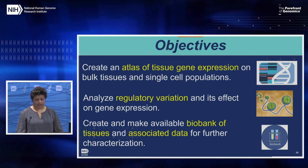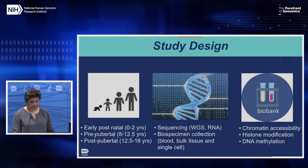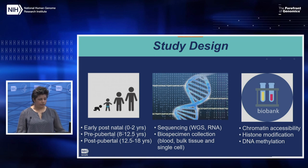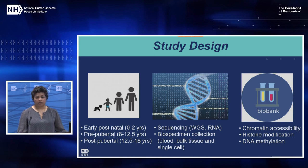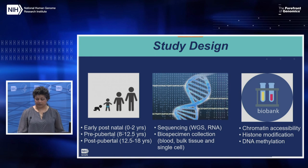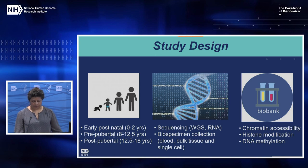This last point is particularly important to prep samples in such a way to do additional analyses. The current study design will recruit 40 donors for each of three age groups — early postnatal, pre-pubertal, and post-pubertal — for a total of 120 donors. These age groups represent significant changes in development. Blood samples will be collected for whole genome sequencing on all donors, and RNA sequencing will be done on a subset of tissues and single cells.